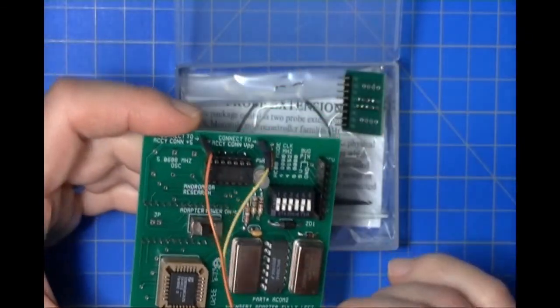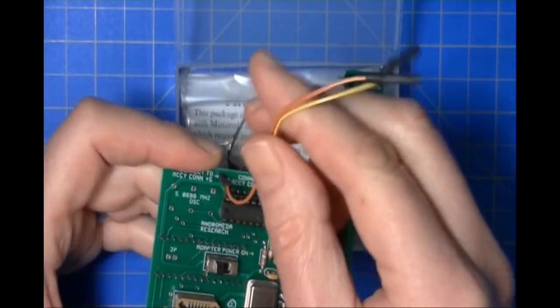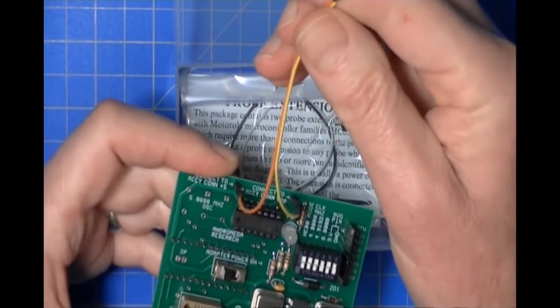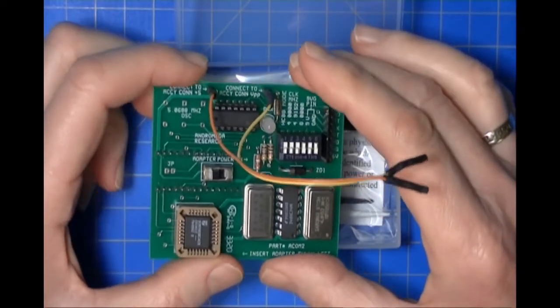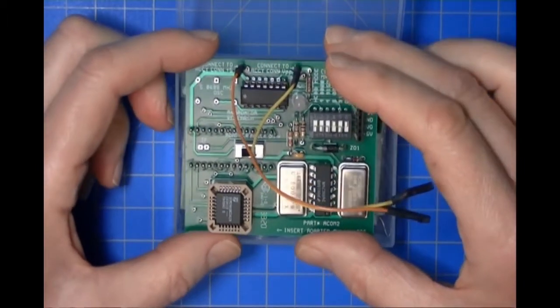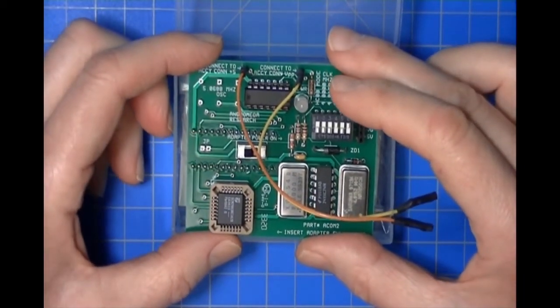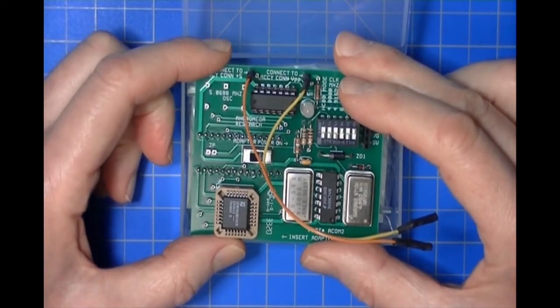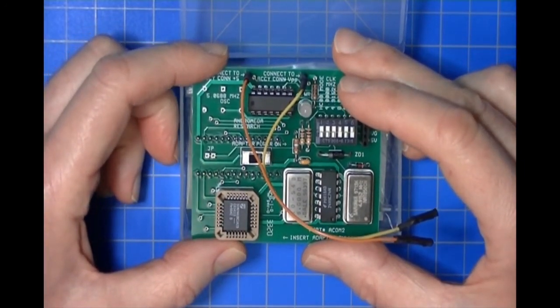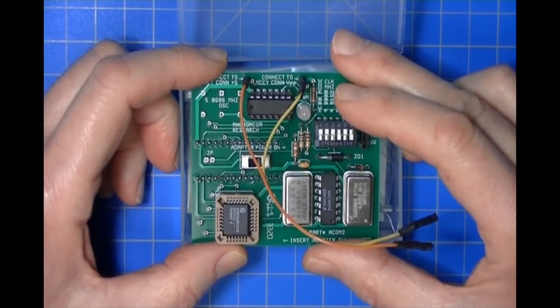You'll notice it's different than the in-circuit adapter. It has two connecting wires here, and the purpose of the wires is they will apply power to the adapter and also provide an external voltage which is required to establish communication with certain families of the microcontroller.